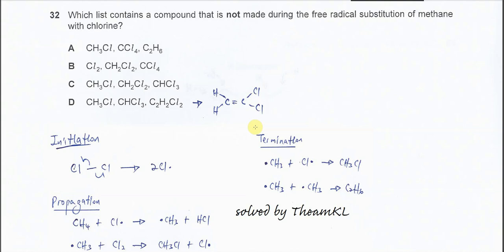Question 32. Which list contains a compound that is not made during the free radical substitution of methane with chlorine?